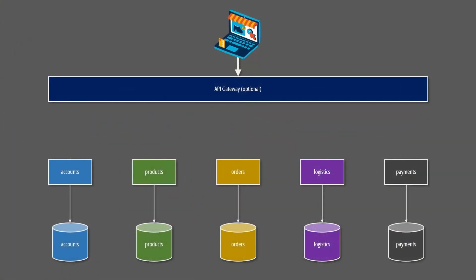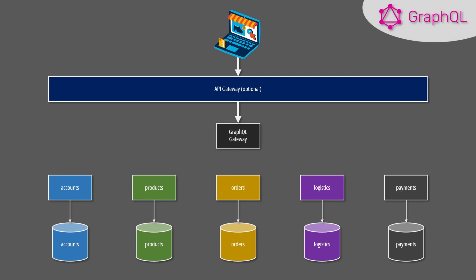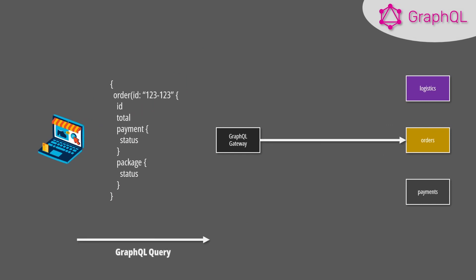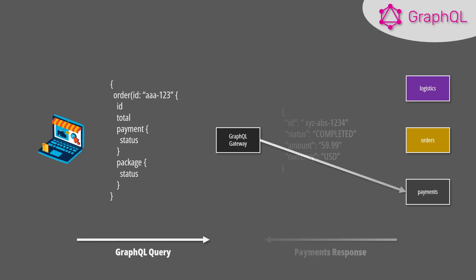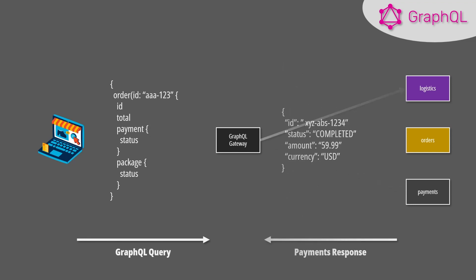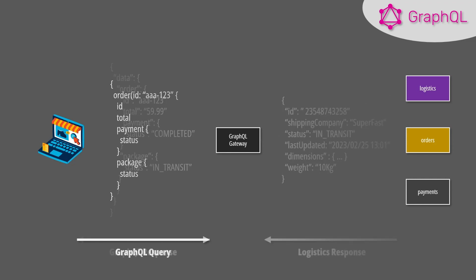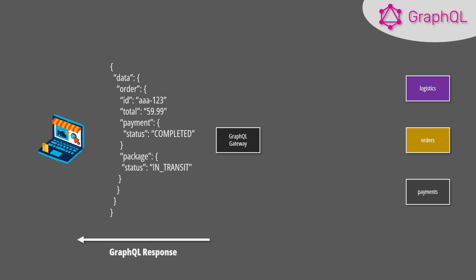Another popular option is to build a gateway service that supports a query language like GraphQL. In this scenario, the client can craft a query specifying exactly what data it needs. The gateway processes the query, contacts the necessary microservices, combines the responses, filters out any unnecessary data, and retains exactly what was requested. The advantages are multiple: we reduce latency but also the size of our responses.